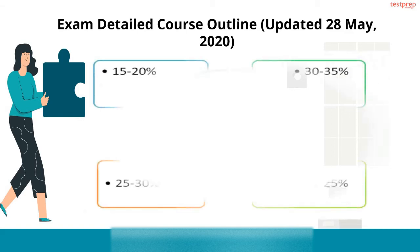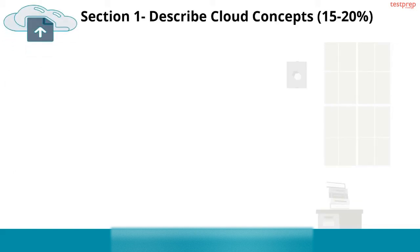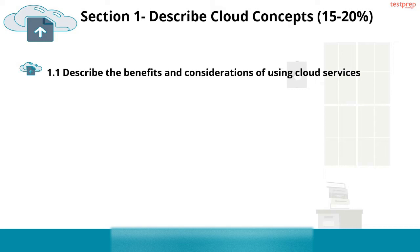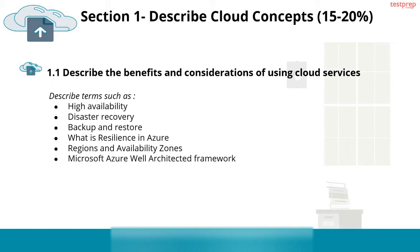Exam Detailed Course Outline. Section 1 — Describe Cloud Concepts, comprising 15 to 20% of the exam. Number 1: describe the benefits and considerations of using cloud services, including terms such as high availability, disaster recovery, backup and restore, resilience in Azure, regions and availability zones, and the Microsoft Azure Well-Architected Framework. Number 2: describe the differences between infrastructure as a service, platform as a service, and software as a service, with four subtopics covering each service type and a comparison of all three.